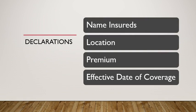The declarations page will also include the policy premium. The premium is the amount the insured is paying for coverage. The declarations page is also going to include the effective date, and the named insured listed on this page will also include the spouse if married.